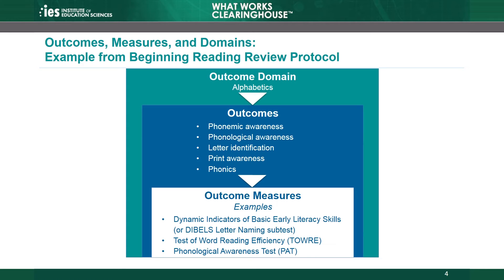Studies can use outcome measures such as the Dynamic Indicators of Basic Early Literacy Skills, or DIBELS, letter naming subtest; the Test of Word Reading Efficiency, TOWRE; and the Phonological Awareness Test, PAT, to measure the outcomes in this domain.